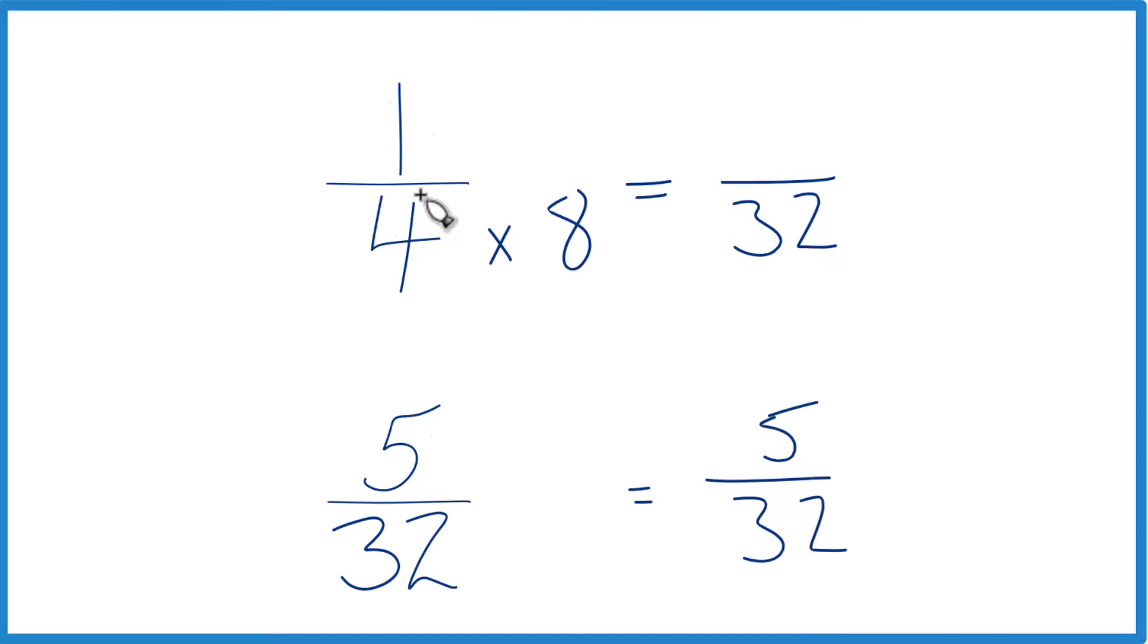And then up here, since I've multiplied the denominator by 8, I need to multiply the numerator by 8 as well. That's because 8 over 8 is just 1, so I'm multiplying by 1. Don't change the value, just the way it's represented. 1 times 8, that's 8.